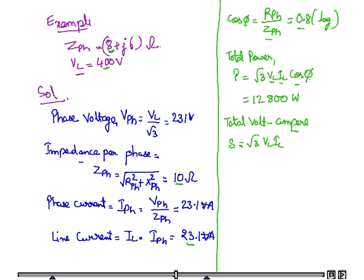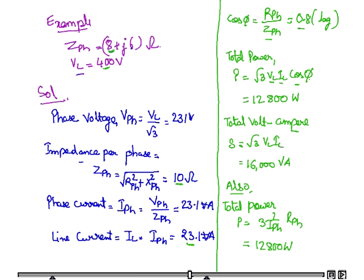Total volt ampere S is given by root 3 times VL times IL, and the result comes out to be 16,030 VA. Also, the formula for total power is 3 times IPH squared times RPH. Where IPH is 23.1 and RPH is 8, putting the values here, we get the same value.